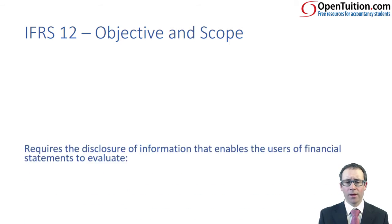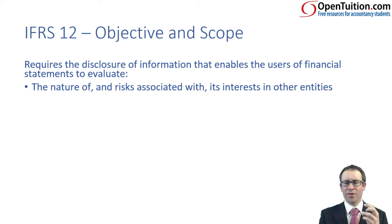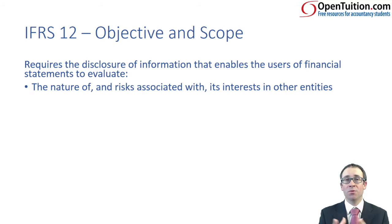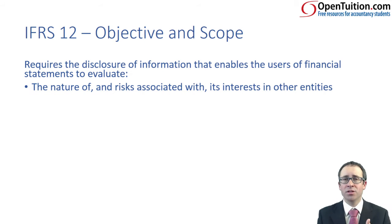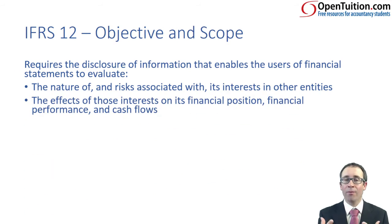Looking at the objective and scope, the objective is that IFRS 12 requires disclosure of information enabling users of financial statements to evaluate the nature of the risks associated with interests in other entities. So you've got a subsidiary that you've consolidated — the numbers are hidden away. You tend to see numbers broken down into individual parent-subsidiary relationships when we look at IFRS 8. But what about joint ventures and associates? They're equity accounted for — we just see them in one line item: investment in associate, investment in joint venture, share of profit of associate, share of profit of joint venture. That's it. You don't see anything to do with the risk associated with them, so the disclosures will hopefully help that out.